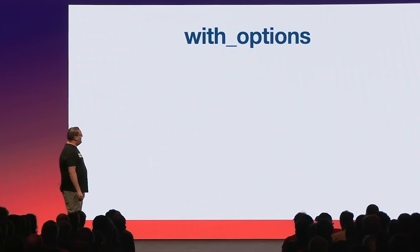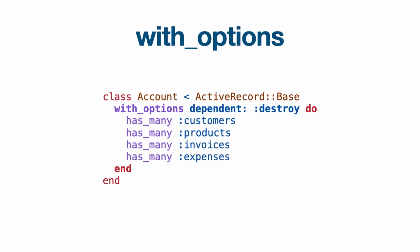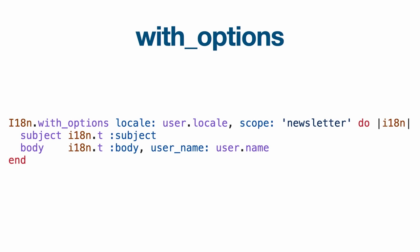`with_options` is a feature in Active Support that's pretty neat. To reduce the redundancy of adding a whole bunch of the same parameters, you can say `with_options dependent: :destroy`, and everything inside that block will get `dependent: :destroy` automatically added. This isn't just an Active Record feature — you can use it in other situations. For example, with internationalization you can set your locale and scope with `with_options`, and then any `I18n.t` calls for subject and body will automatically include the locale and scope, simplifying your method calls for redundant things.